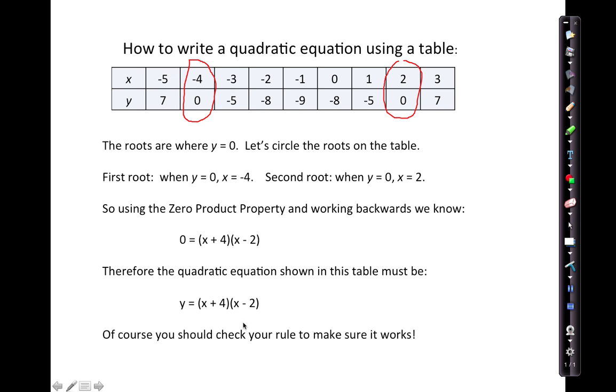Of course, you should check your rule to make sure it works. Plug in some of the values for x, like try x equals negative 5, and make sure that you get the value shown for y. Make sure that you get y equals 7 when x equals negative 5, and so on. So check a couple values from your table to make sure it works.